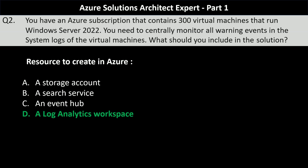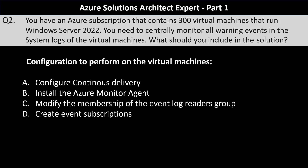The next part is the configuration to perform on the virtual machines. Your options are configure continuous delivery, install the Azure Monitor agent, modify the membership of the event log readers group, or create event subscriptions. The correct answer is to install the Azure Monitor agent on the virtual machines. Azure Monitor agent collects performance metrics, logs, and custom data from your virtual machines. Installing this agent is essential to gather the system logs and send them to the log analytics workspace.